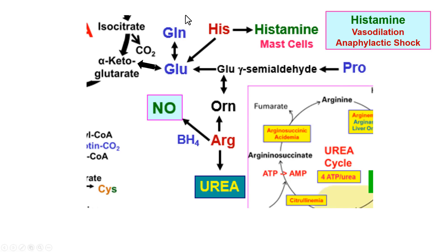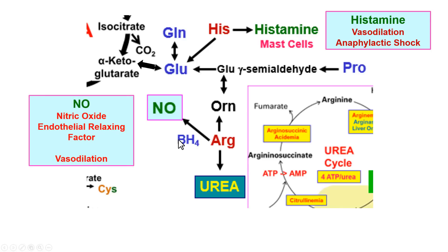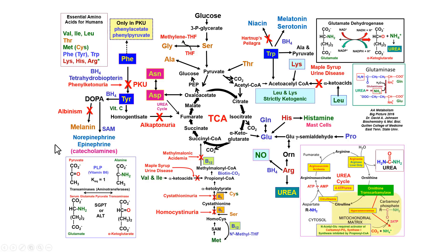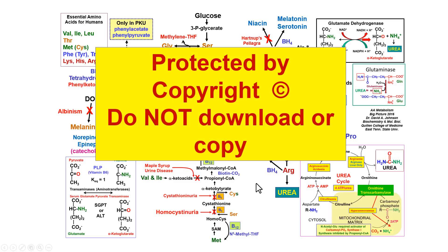Proline goes to glutamate; glutamine also feeds into alpha-ketoglutarate. Arginine is used in the urea cycle, but it can also be used with tetrahydrobiopterin to make nitric oxide via nitric oxide synthase. Nitric oxide is the endothelial relaxing factor, causing mild vasodilation of our vessels — something our endothelial cells maintain continuously. This concludes the big picture overview of amino acid metabolism. Good luck with your studying.